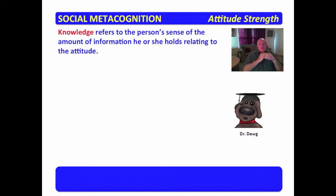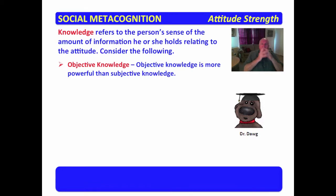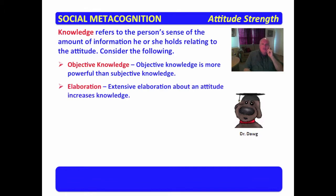Knowledge refers to the person's sense of the amount of information he or she holds relating to the attitude. Objective knowledge is more powerful than subjective knowledge in building attitude strength. If knowledge is deemed objective, clear, and held even by others, it is much more relevant to seeing the attitude as having strength than if it's simply based upon a subjective opinion.